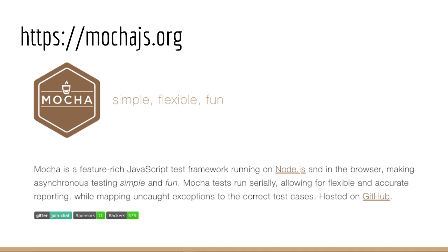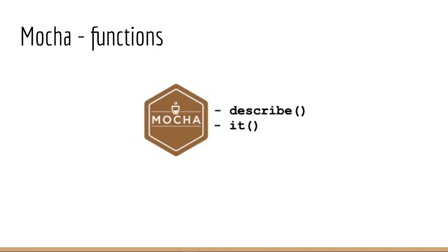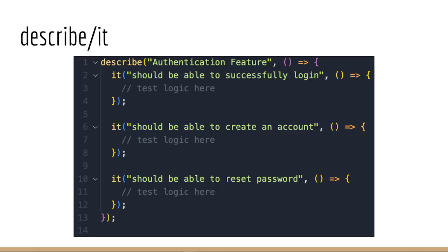Mocha comes pre-bundled with two function calls: describe, used to group related test cases into a test suite, and it, used to define individual test cases within a test suite. Describe takes two arguments: a string that describes the test suite and a callback function that defines the test cases within the test suite.